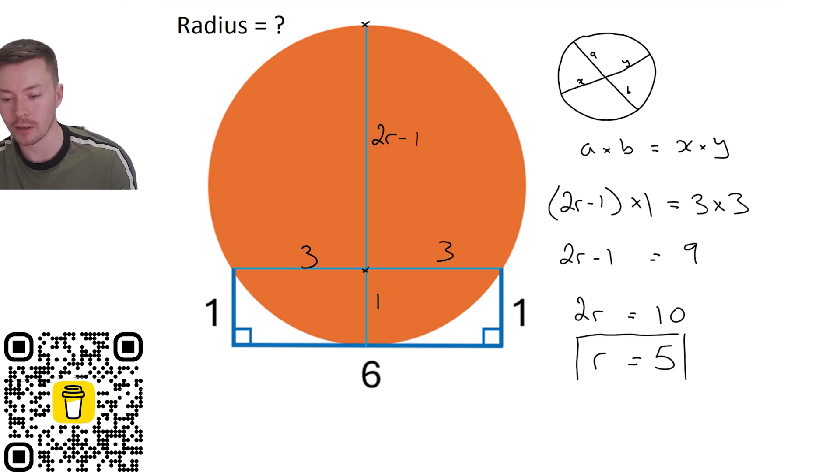Which is pretty neat, I think. Pretty nice way of working out that solution. If you had a better way or even a different way, maybe one that doesn't use that intersecting chord theorem, share it down in the comments. How else could you do this?